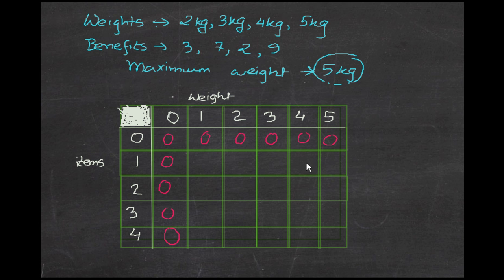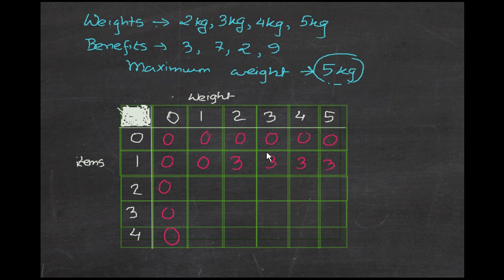The iteration goes through all four items. During the first iteration, the thief can only take the first item. When the weight is 1 kg, the value is zero since the first item weighs 2 kg. At 2 kg, the benefit is 3. For 3, 4, and 5 kg, the benefit remains 3 since we're still only considering the first item — the thief can only take that one 2 kg item with a benefit of 3.